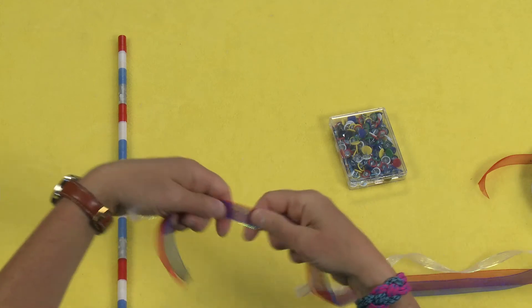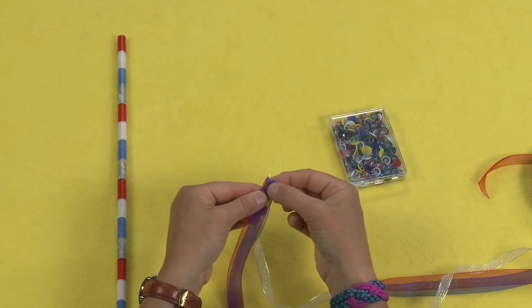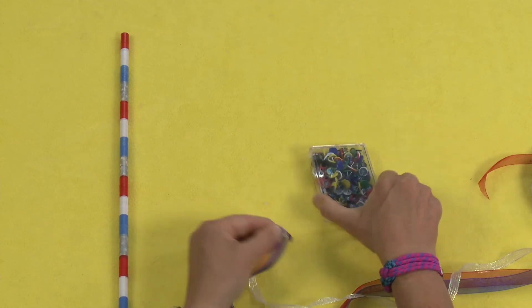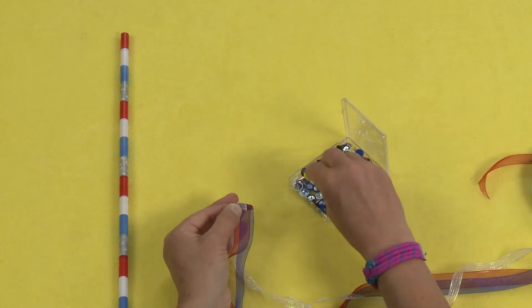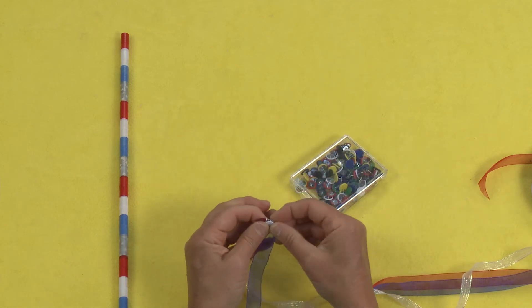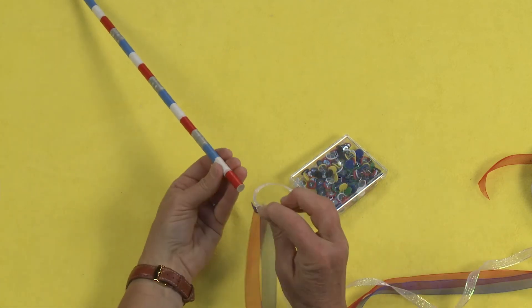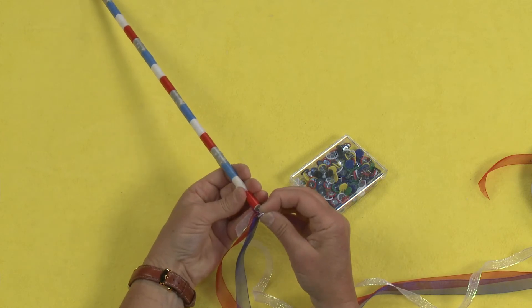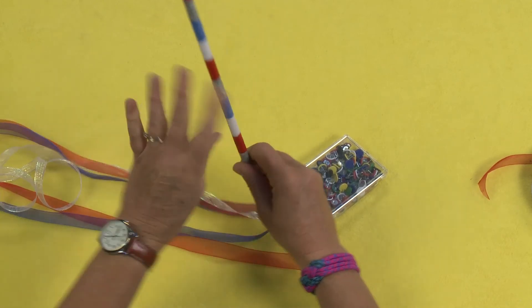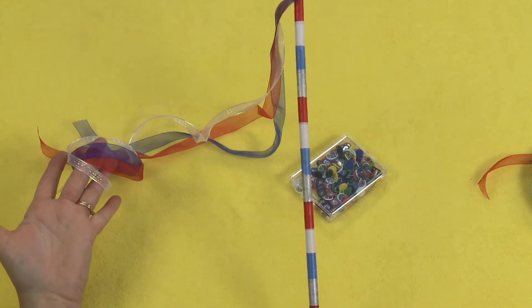And now here's the easy part. Just take the end of your three ribbons and roll it over onto itself twice to make a fold over. Then take your pin, doesn't matter what color you use, place that pin through the fold over. Then take the pin end and just stick it right in the top of your dowel. Turn it upside down and push. And that's all there is to making this amazing fabulous ribbon stick. Now you're ready for a parade.